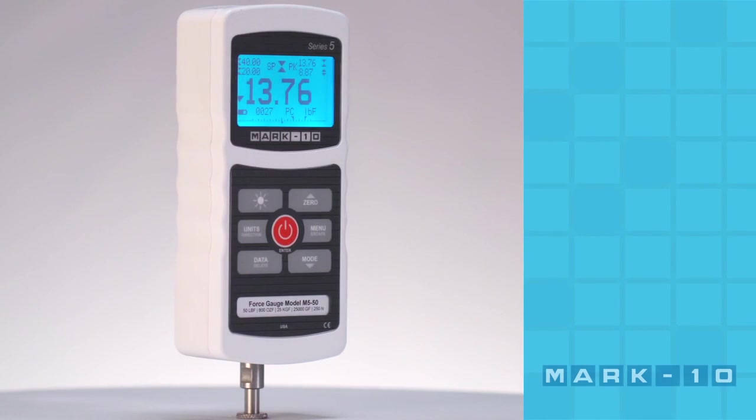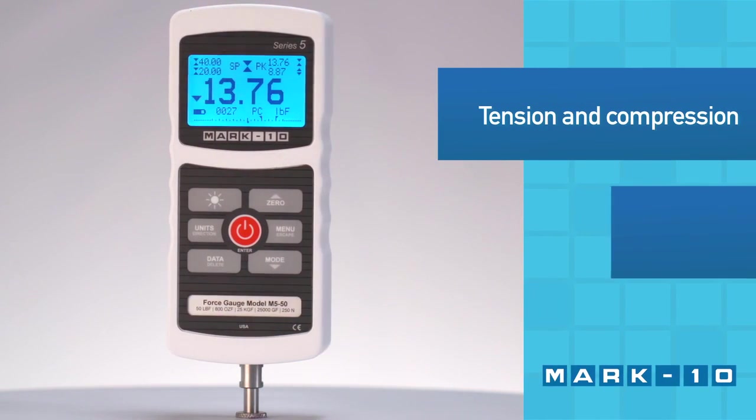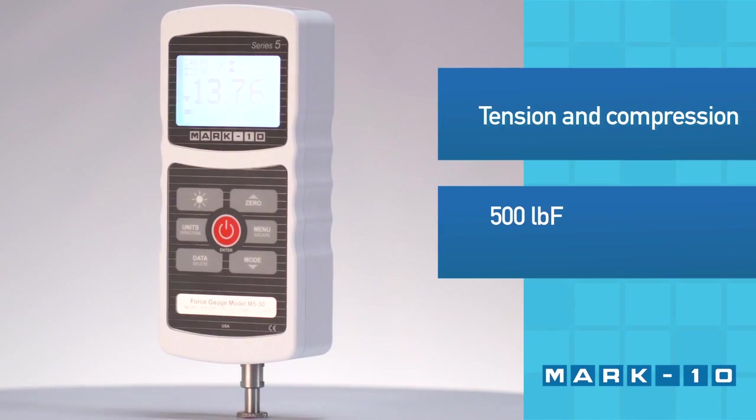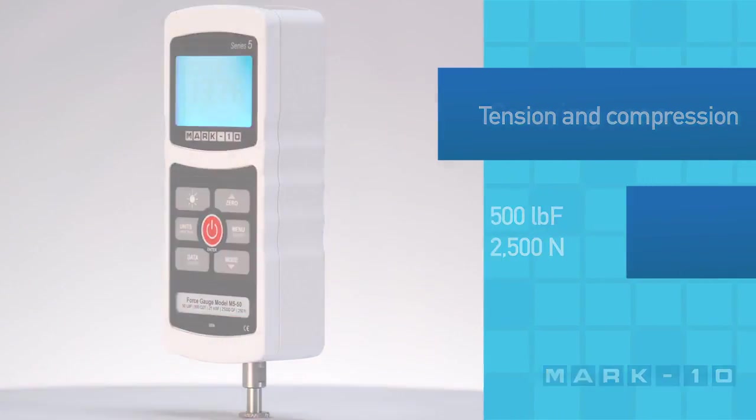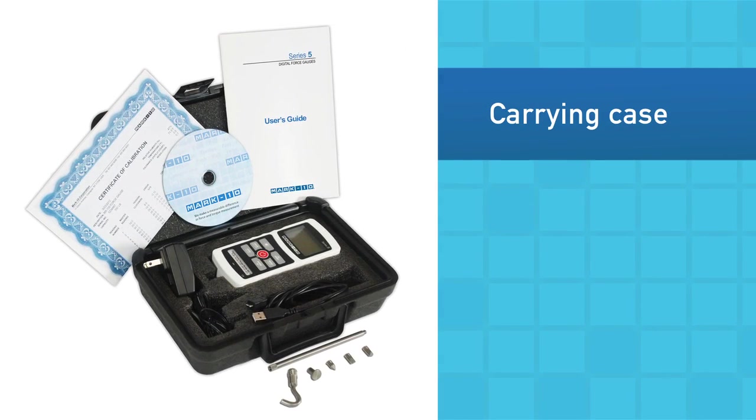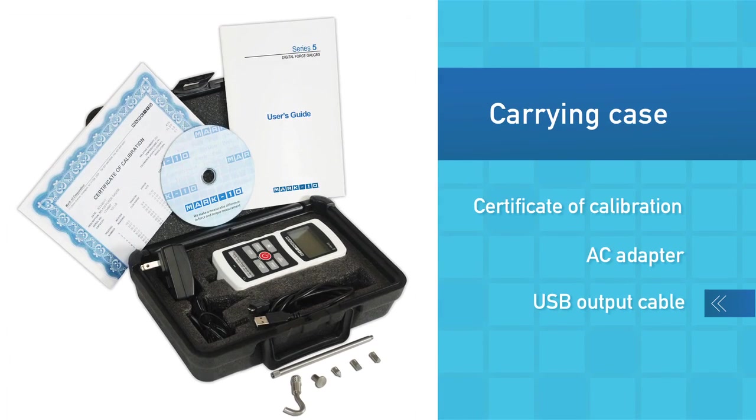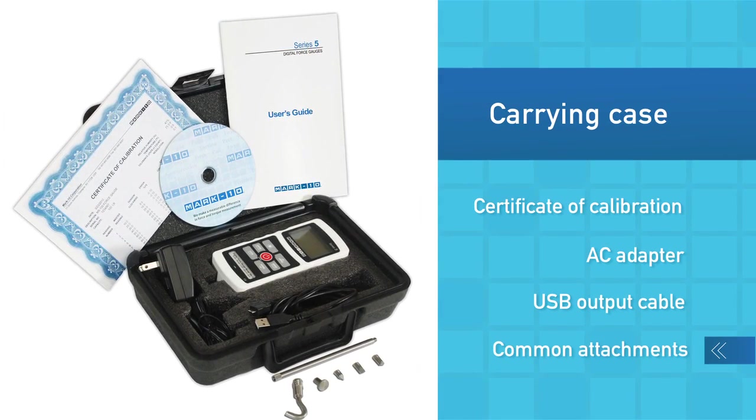The Series 5 Force Gauge is an advanced solution for tension and compression force measurement with capacities up to 500 pounds of force or 2,500 Newtons. The Force Gauge is supplied in a cushioned carrying case with certificate of calibration, AC adapter, USB output cable, and a set of common attachments.